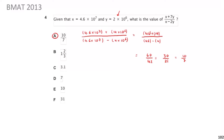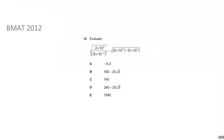Now we move on to BMAT 2012 Question 12 — evaluate a double-term expression involving a square root and a cube root. This is a starred question as quite a few people find it difficult. Give it a go, pause the video, and we'll go through the solution.